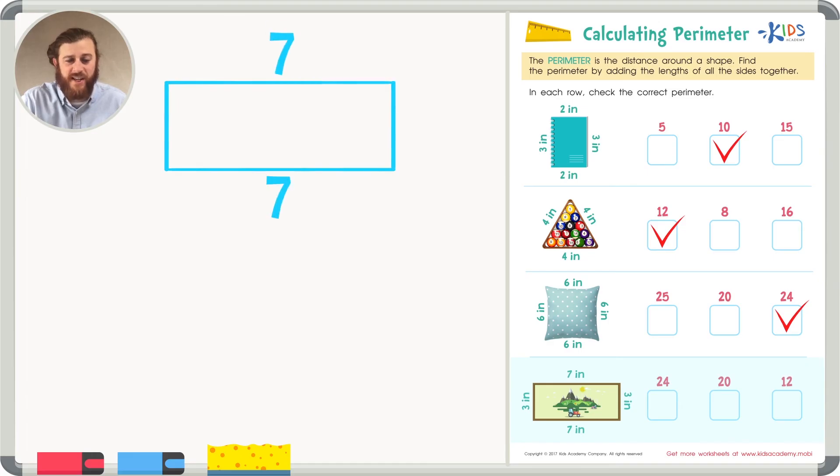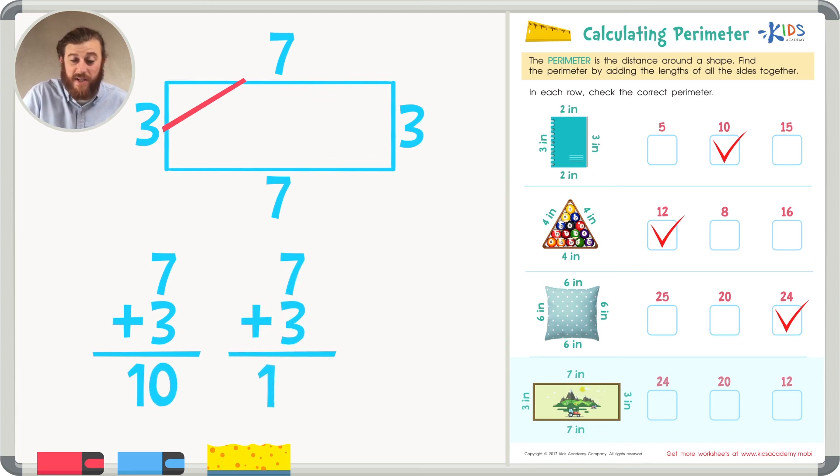If we have sides of seven inches and seven inches and three inches and three inches, I know that I can make a ten by adding seven plus three. So instead of using doubles of this, I'm using friendly numbers. So seven plus three equals ten. And again, if I add seven plus three, it gives me a sum of ten. Now I can add my two tens together, and everybody knows ten plus ten equals twenty. Giving you a perimeter of twenty.